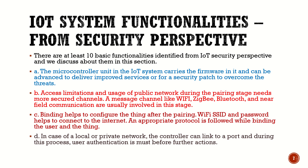Second: access limitations and usage of a public network is very important. During the pairing process, we need more secure channels. When we go to a railway station or bus stand where internet is available as open Wi-Fi, we need to be careful. Message channels like Wi-Fi, Zigbee, Bluetooth, or NFC are usually involved at this stage, and we need to make sure those channels are more secure.